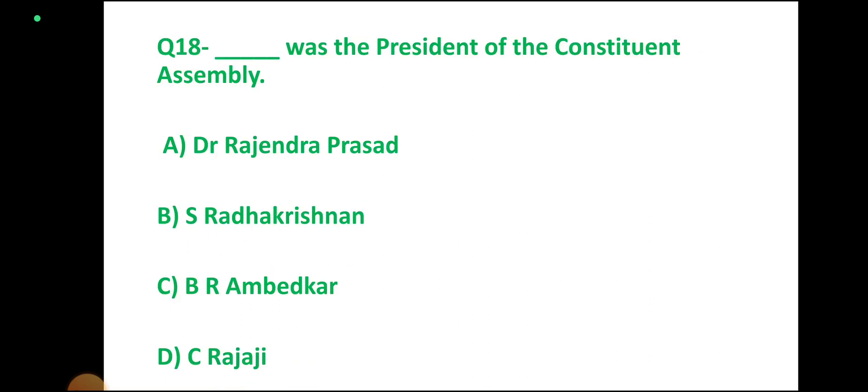Question number 18. Who was the President of the Constituent Assembly? Options: Dr. Rajendra Prasad, Radhakrishnan, B.R. Ambedkar, Rajaji. Correct answer: Dr. Rajendra Prasad. Option A is correct.